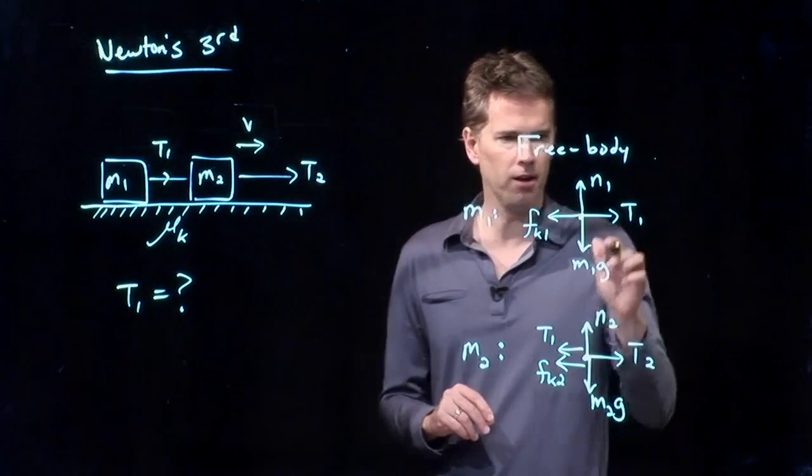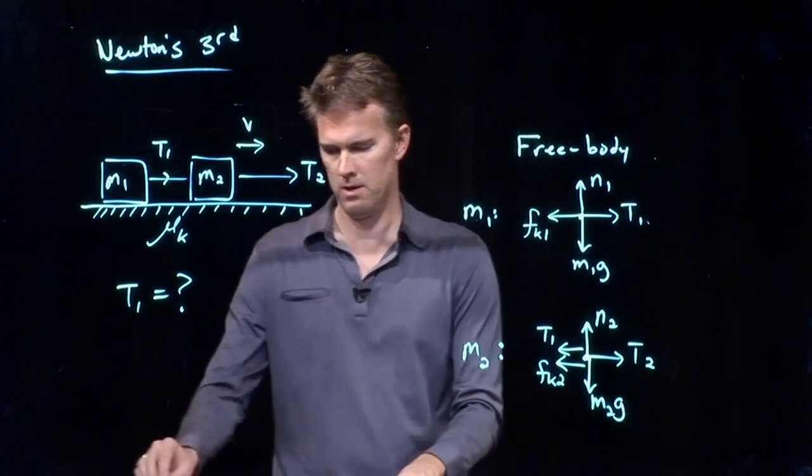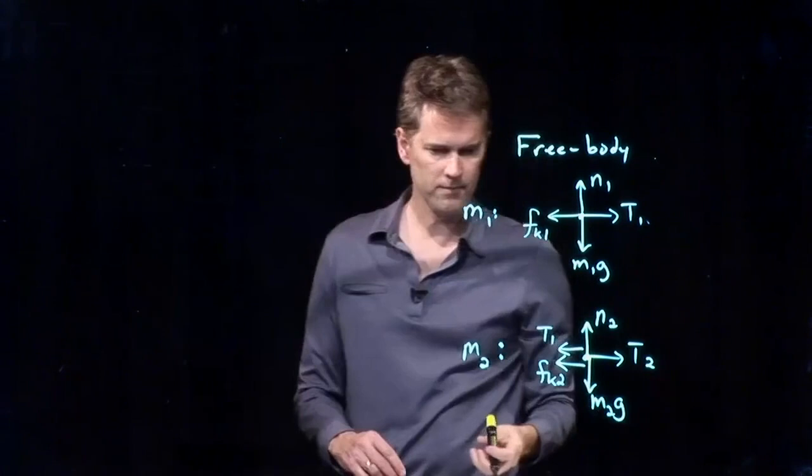What are the Newton's third law pairs? It's T1. T1 going to the right on mass 1 means T1 going to the left on mass 2. Let's see if we can solve this thing now for T1.